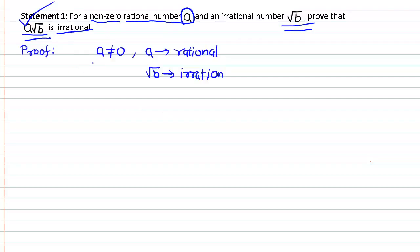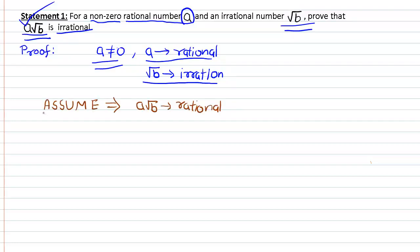In the statement it is given that a is not equal to 0, a is a rational number, and √b is an irrational number. We have to prove that a multiplied by √b — that is, the product of a and √b — is irrational. So let's assume that a × √b is rational.